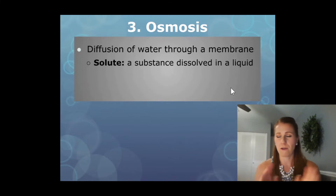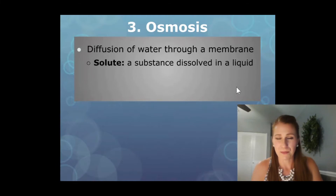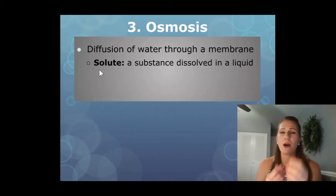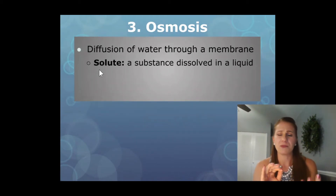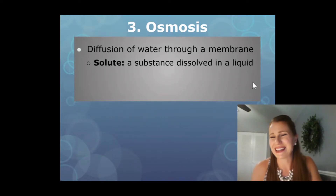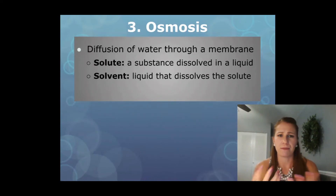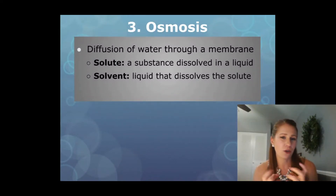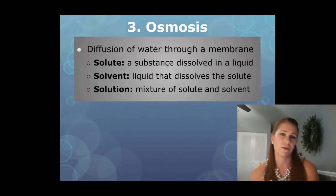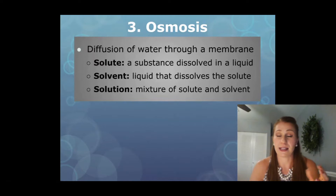When we talk about osmosis, we have to go over a few key terms. A solute is a substance dissolved in a liquid — typically something in crystal or powder form, like salt, sugar, or glucose, because it's going to be dissolved in a liquid like water. The solvent is that liquid — whatever is doing the dissolving. And the solution is the mixture of the two things. Solution sounds like the final ending: it's when you have a mixture of the previous two things.